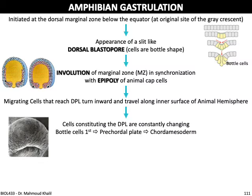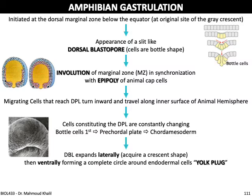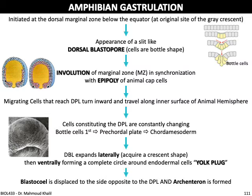The two mechanisms are involution followed by epiboly. The migrating cells that reach the dorsal blastoporal lip turn inward and travel along the inner surface of the animal hemisphere. The cells contributing to the dorsal blastoporal lip are constantly changed: first the bottle cells enter, then the pre-chordal plate, then the chordal mesoderm. The dorsal blastoporal lip then expands laterally, acquiring a crescent shape, and eventually extends ventrally to form a complete circle around the endodermal cells called the yolk plug.